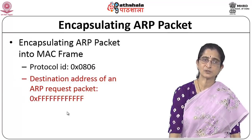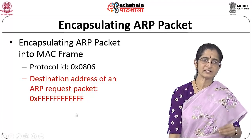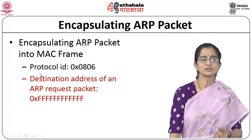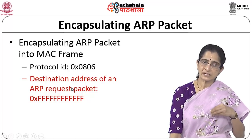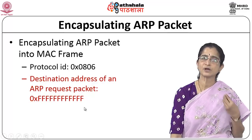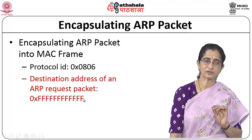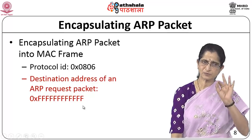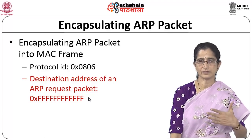The ARP packet is sent encapsulated in a MAC frame. If using Ethernet, the appropriate protocol ID is given to identify that this is a MAC frame. Since an ARP request is broadcast, the destination address of the ARP request packet is the broadcast address of all ones. ARP replies, however, are sent as unicast packets. Using this simple request-and-response mechanism, ARP maps IP addresses to MAC addresses.